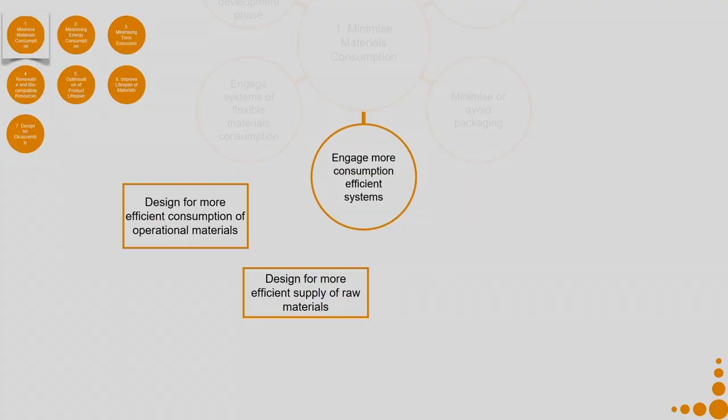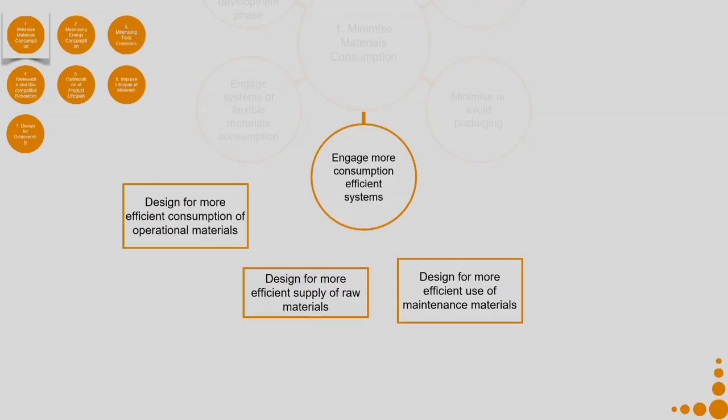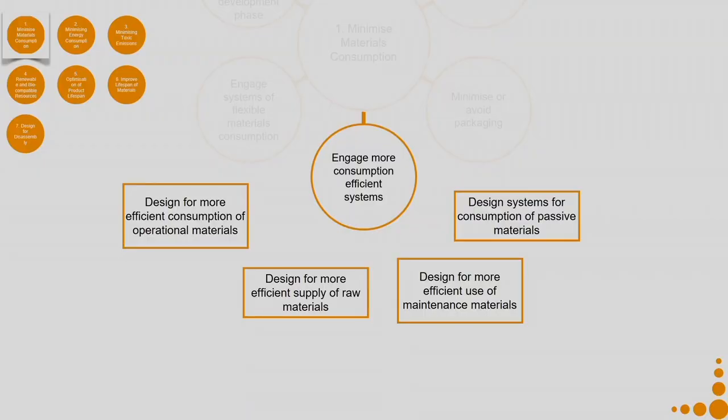Design for more efficient supply of raw materials — when making your product, see how to achieve a more efficient supply of raw materials. Design for more efficient use of maintenance materials — all things required for maintaining your product, how can you build in efficiency there? For example, using our filter example, the filter is a product that needs to be continuously changed — that is a maintenance material — and we can see how to bring in more efficiency.